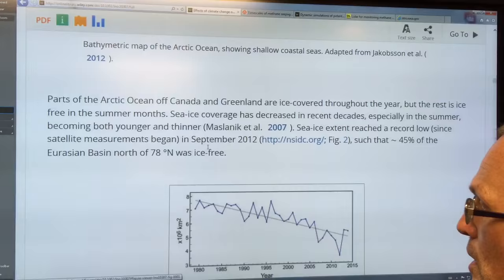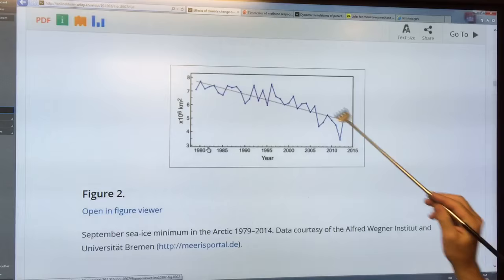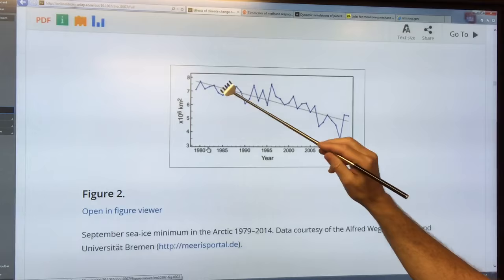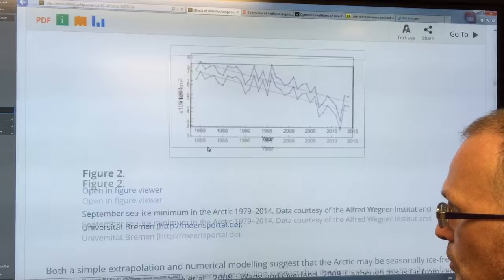There's our diagram. Most people are familiar with the drop of sea ice area or extent. You could easily fit an exponential curve to this as well as a linear fit there. We're rapidly losing sea ice.